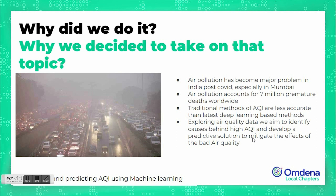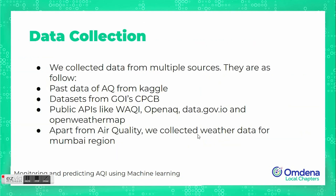When we started, our major goal was data collection. We explored data through various platforms, research organizations, and government organizations to understand the depth of the problem. We leveraged Kaggle's past datasets, and also utilized the Government of India's CPCB — the Central Pollution Control Board — which collects data through various sensor stations. We accessed APIs and static data from their website.